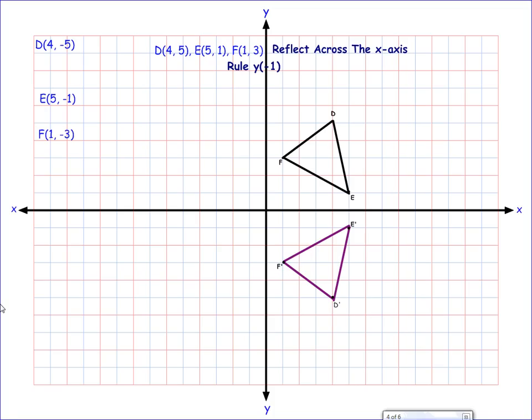Now what I'd like you to notice is that when we were working with reflection, this is reflection. When we were working with translation, the entire figure was moved to the translated points. In this case, reflection, what we see is that the shape flips over the x-axis. In effect, what we're doing is giving it a mirror image. And you can tell that by E.